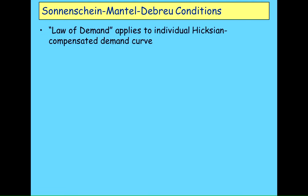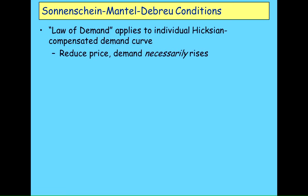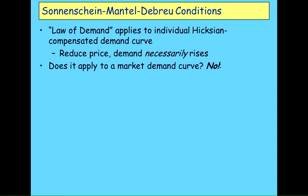We've all taught — or learned — the law of demand. That applies to an individual Hicksian compensated demand curve, where you prove that if you Hicksian-compensate the boost in income that applies when you have a fall in price, you necessarily have an increase in demand. That's the law of demand. The question the SMD conditions ask, among the very tiny minority of economists who actually know them, is: does that apply to the market demand curve? And the categorical conclusion is no.